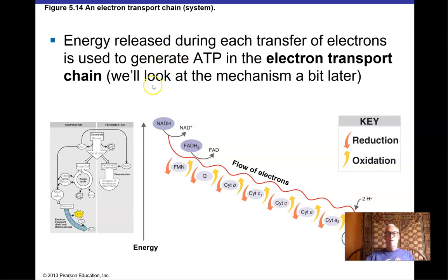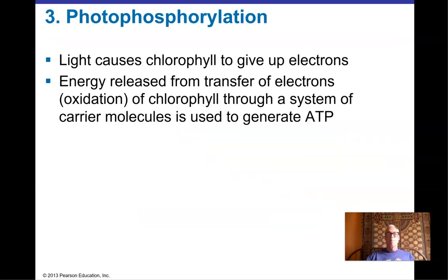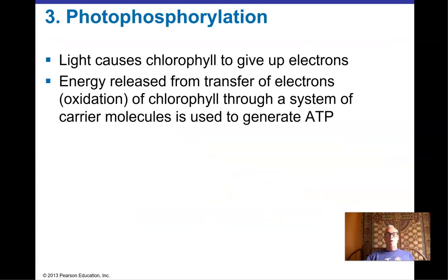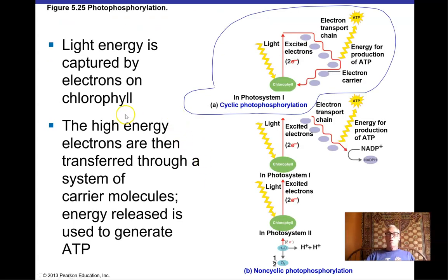Some microorganisms use chemicals other than oxygen to capture those final electrons — that's anaerobic respiration. Still using the Krebs cycle and electron transport chain but without oxygen, these organisms get a large number of ATPs. Bacteria are very metabolically versatile. We still need to explain where the ATP actually comes from as electrons travel down the chain — that involves photophosphorylation concepts as well.